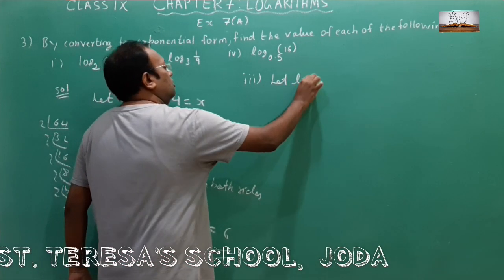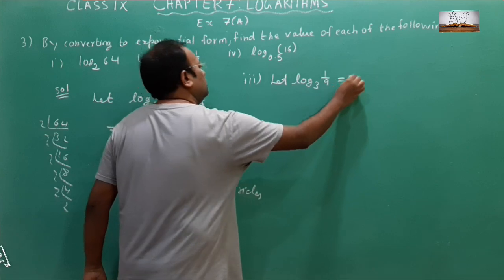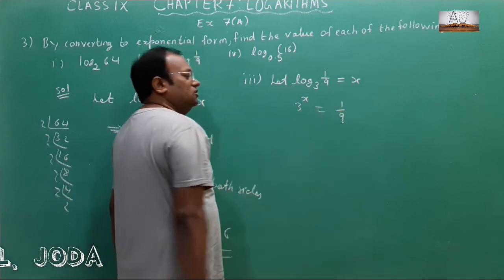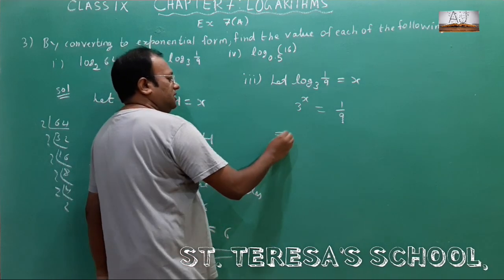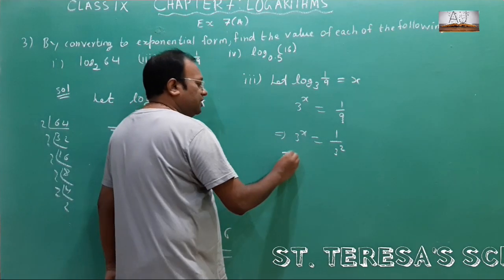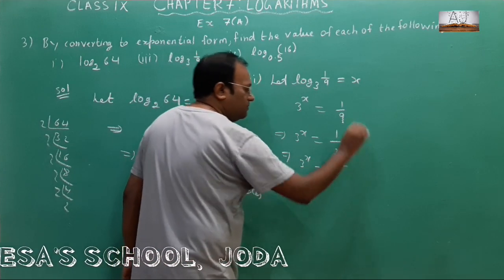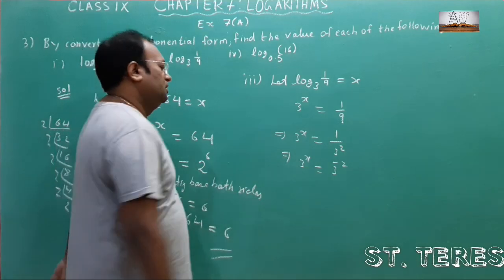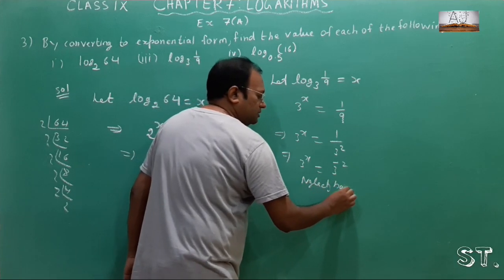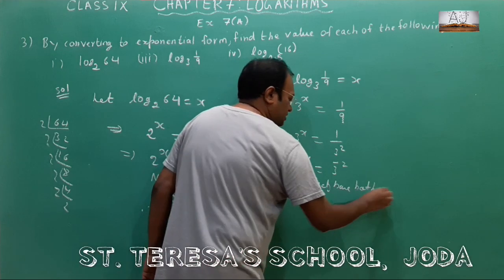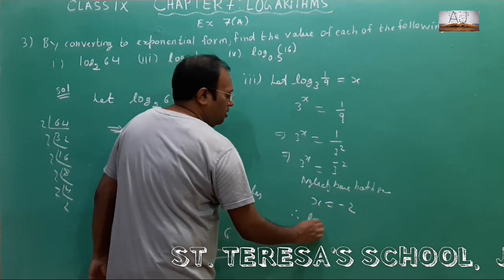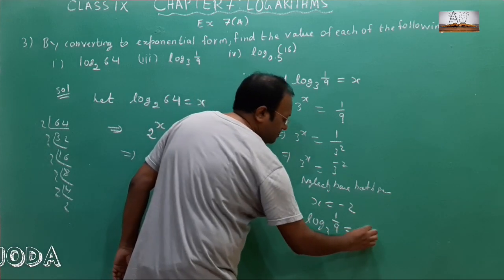Similarly, let log base 3 of (1 by 9) equal x. Convert to exponential form: 3 to the power x equals 1 by 9, which is 1 by 3 to the power 2, which equals 3 to the power minus 2. Neglecting the base on both sides, x equals minus 2. Therefore the value of log base 3 of (1 by 9) is equal to minus 2.